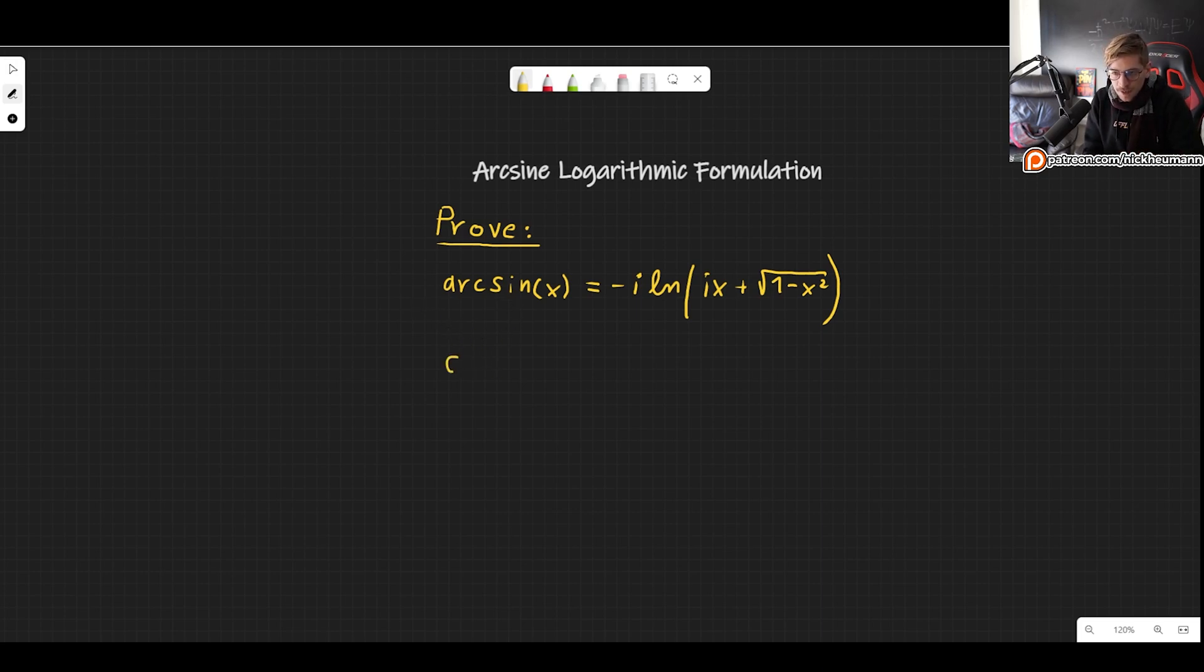So let's begin by writing that the arc sine of x, this is equal to some function y. Or some variable y, doesn't matter, depends on the context. Now, this, of course, implies that x is the sine of y. All right? So nothing new there.